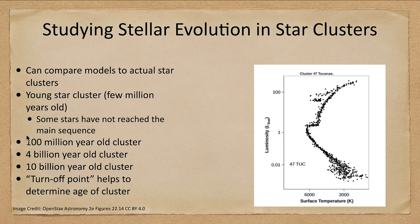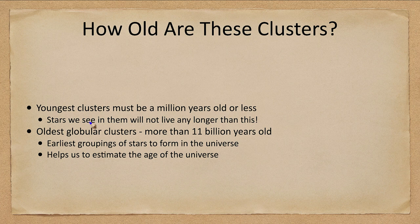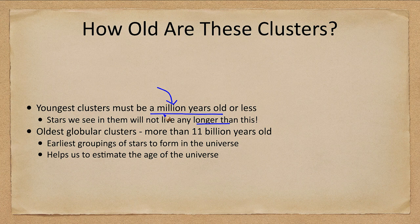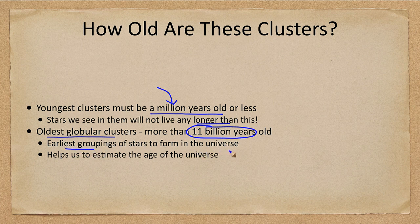The youngest clusters must be a million years or less in age — we know this because the stars we see in them don't live any longer than that, so if the cluster were older those stars would be gone. The oldest globular clusters are more than eleven billion years old, representing some of the earliest groupings of stars to form in the universe, and they help us put a limit on and estimate the age of the universe, which we will look at later.